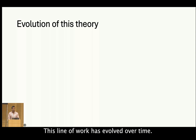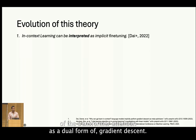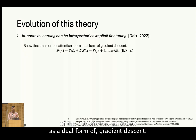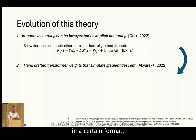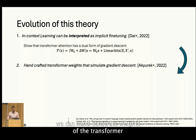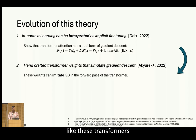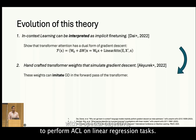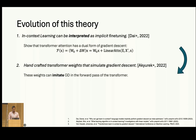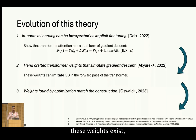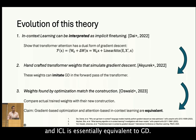This line of work has evolved over time. It started with an interpretation of transformer attention as a dual form of gradient descent. Next, it was shown that if inputs are presented in a certain format, we can hand-construct weights of the transformer that would simulate a step of gradient descent in the forward pass. They trained these transformers with a special objective to perform ICL on linear regression tasks. And finally, it was claimed that not only do these weights exist, but trained transformers actually mimic gradient descent and ICL is essentially equivalent to GD.